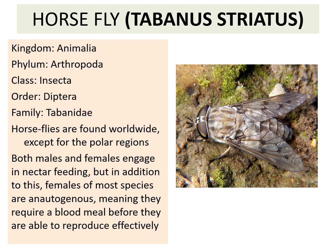They are found worldwide except for the polar region. Both male and female engage in nectar feeding. But in addition to this, the females of most species are anautogenous, meaning they require a blood meal before they are able to reproduce effectively.